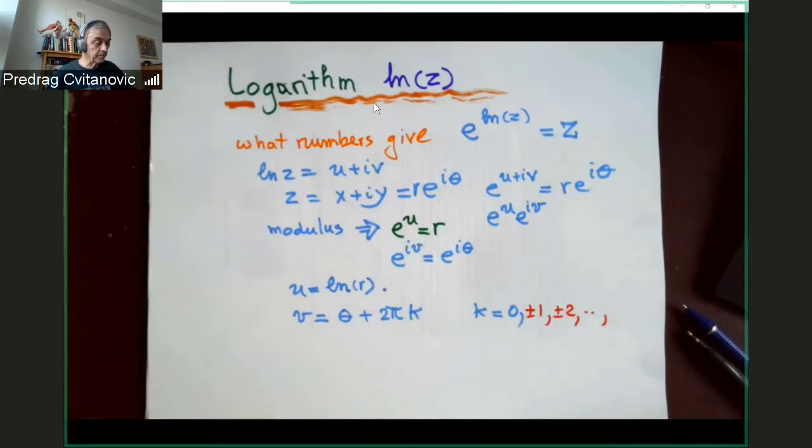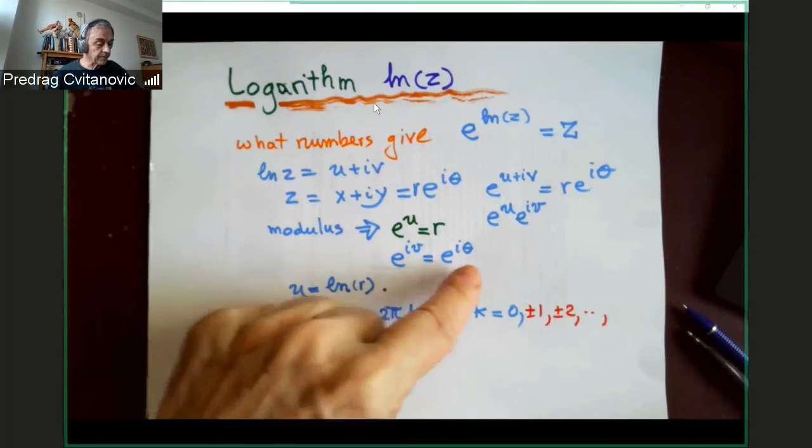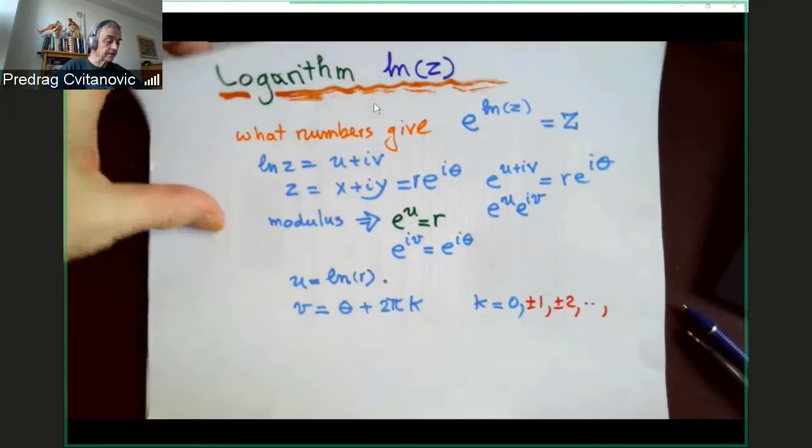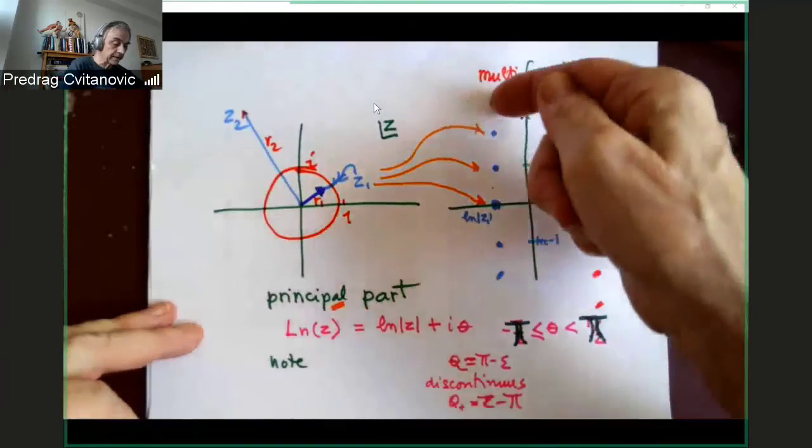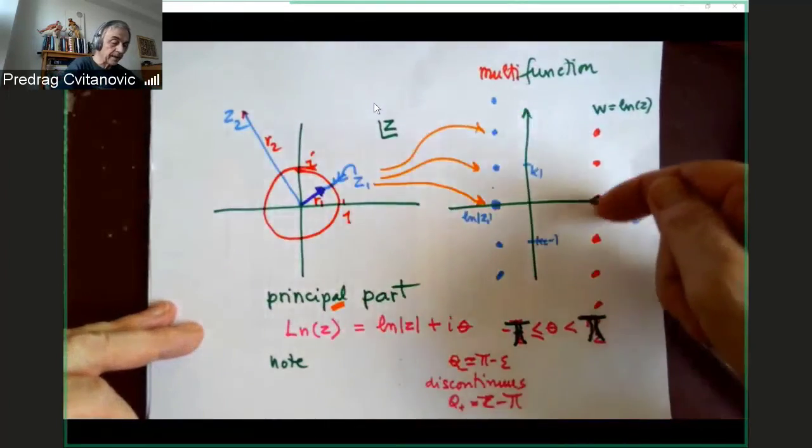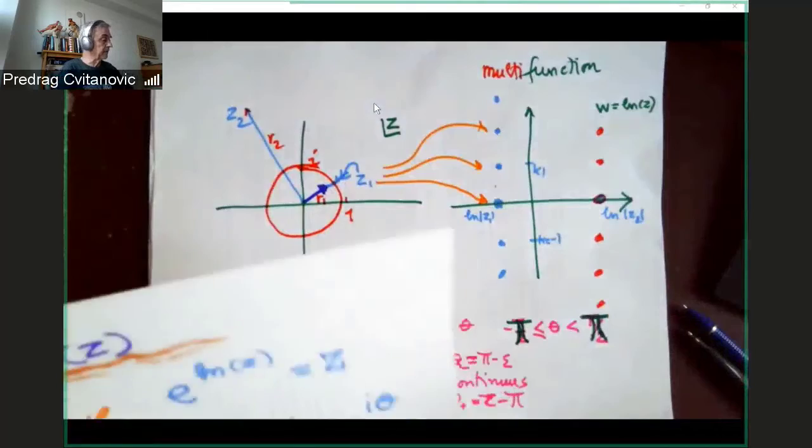And when you plot them, you just plot imaginary part, as always, on a vertical axis, and that's what these dots are. They're separated by intervals two pi, but there are infinitely many of them.